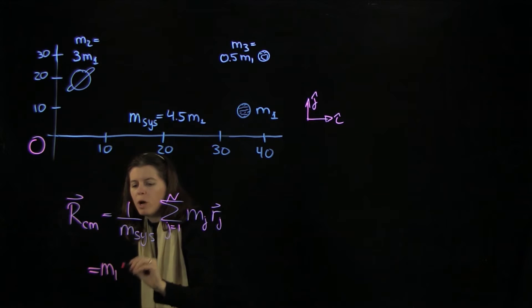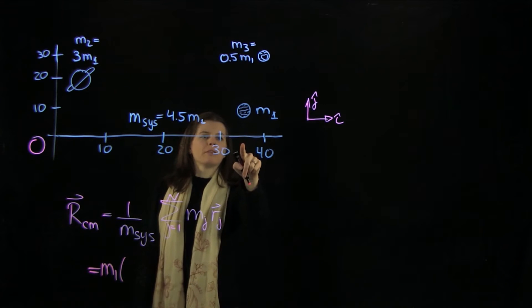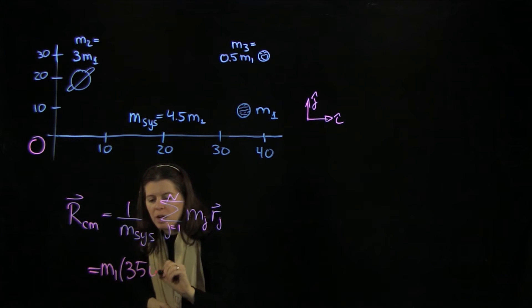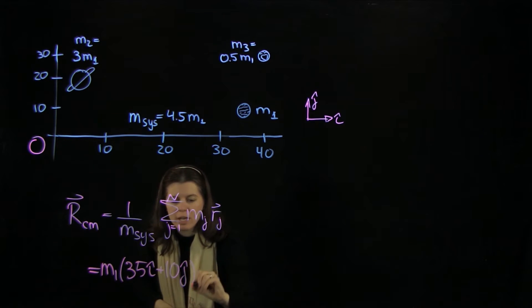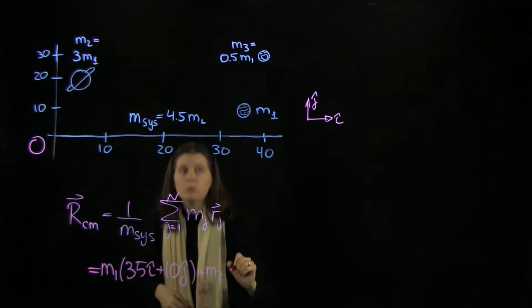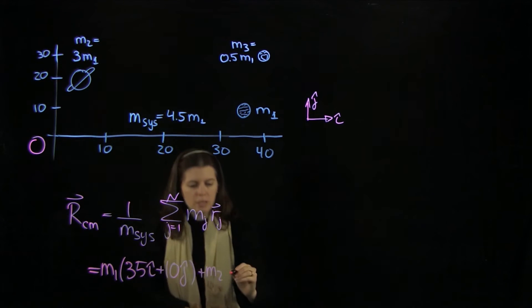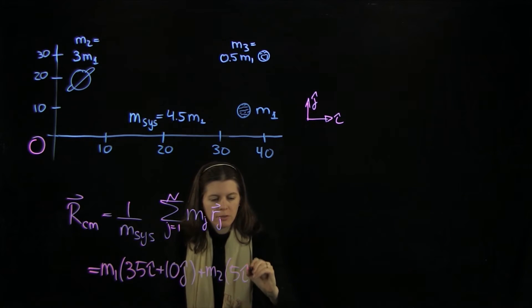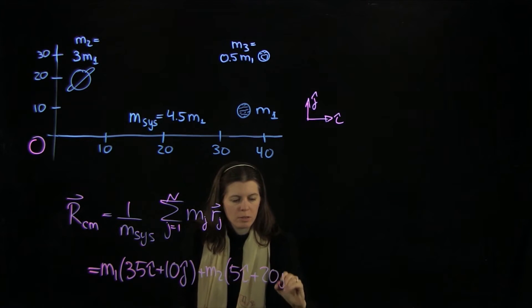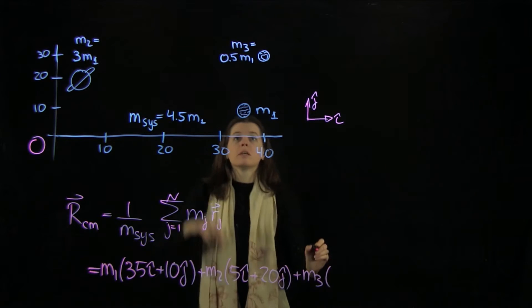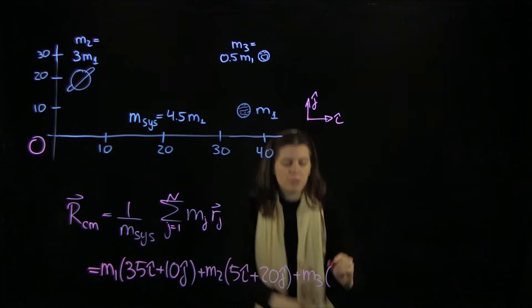We have m1 and we're going to have 35 and 10: 35 i-hat plus 10 j-hat plus m2. That's going to be 5 and 20. And then m3, we have 40 and 30.